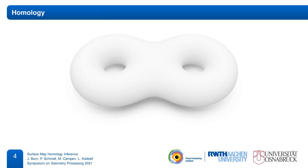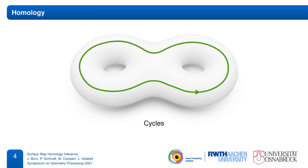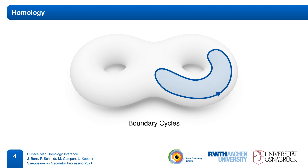Our topological map representation is built on the concept of homology, which describes an equivalence relation between cycles on surfaces. A cycle is an oriented closed loop embedded in a surface. Two cycles can be composed by addition, which superimposes them, while parts with opposite orientation cancel. Some cycles are topologically interesting because they wind around handles or tunnels of the surface.